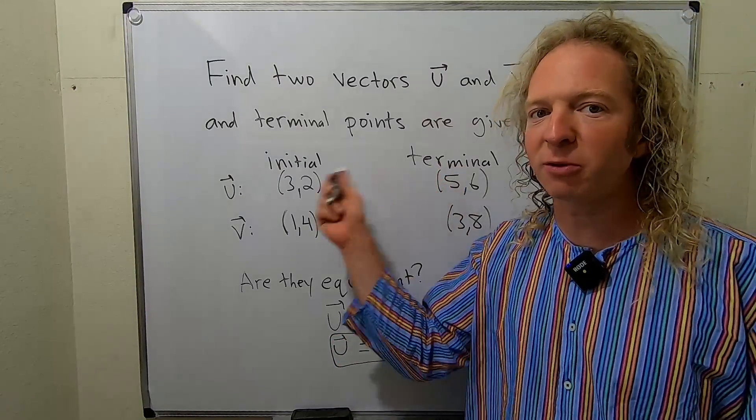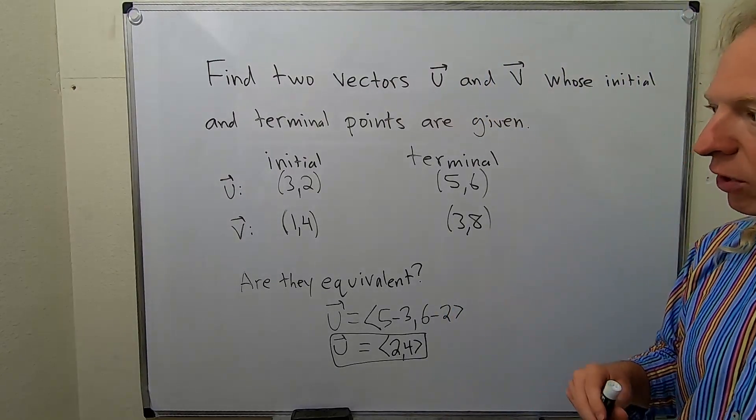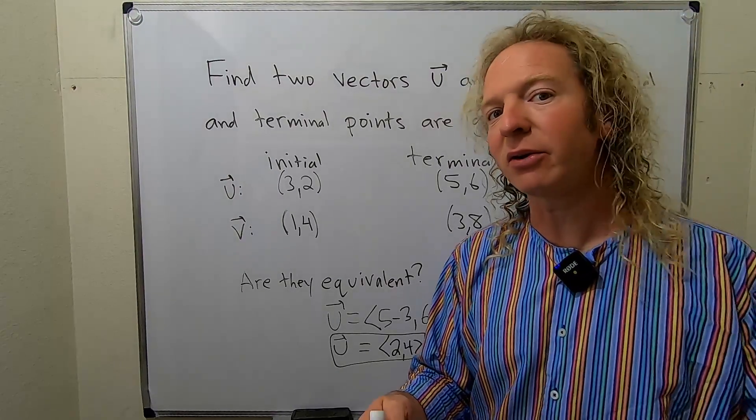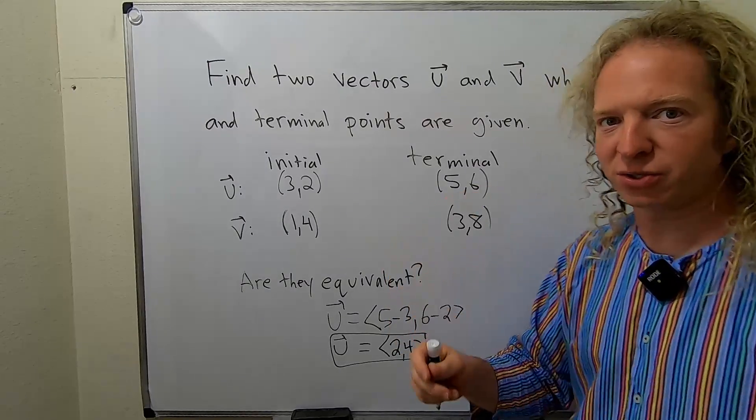It's really important, the whole terminal minus initial thing. You might think it's really simple. It's important for understanding later. If you want to understand certain derivations in Calculus 3, it's really important to have this notion of terminal minus initial down.